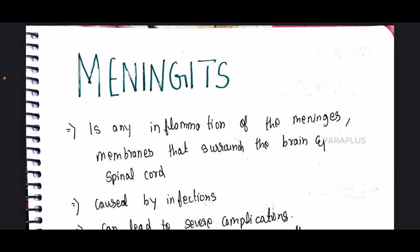So, this is a region in our brain. There is a membrane. That membrane is called Meninges.